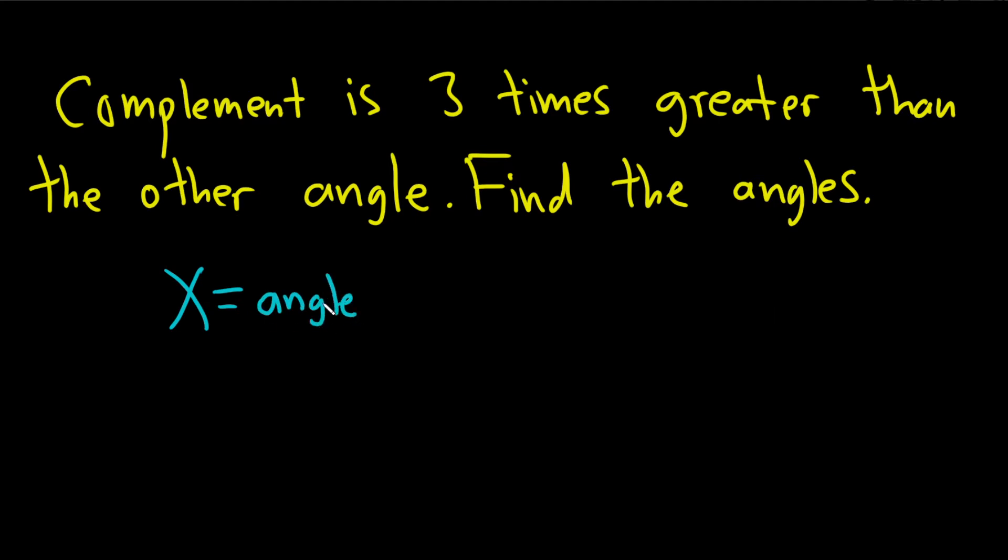The complement of x is three times bigger than this one, so it'll be 3x. This is the complement. So what are complementary angles? They add to 90. That means x plus 3x is equal to 90 degrees.